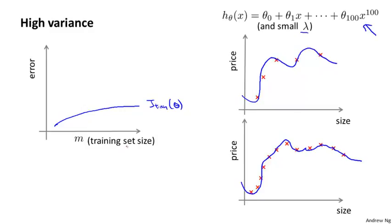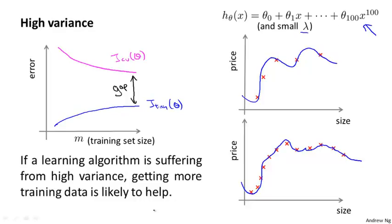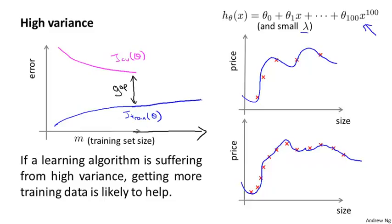In the high variance setting, a hypothesis is overfitting, so the cross-validation error will remain high even as we get a moderate number of training examples. The indicative diagnostic for a high variance problem is a large gap between the training error and the cross-validation error. If we extrapolate the figure to the right, we can tell the two curves are converging — the training error keeps going up and the cross-validation error keeps going down.